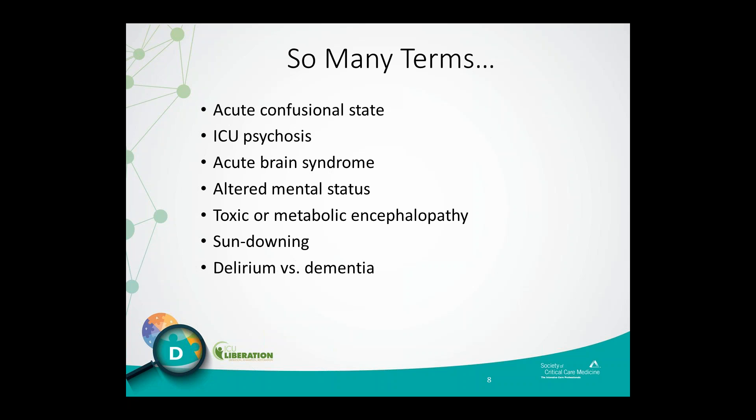One of the reasons for the confusion surrounding the term delirium relates to the fact that it was only relatively recently that we had a way to detect delirium without the help of a psychiatric colleague. Dr. Sharon Inouye developed the CAM back in 1990, and one of the first tools used to detect delirium in the ICU wasn't developed until 2001 — less than 15 years ago. One of the most important terms to clarify is the difference between delirium and dementia. Dementia is the chronic progressive form of brain injury, compared to delirium which often has an acute onset. Patients with dementia can and often do develop delirium on top of their dementia when severely ill.